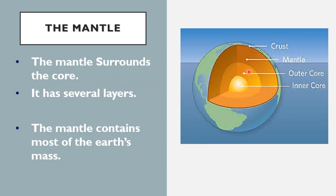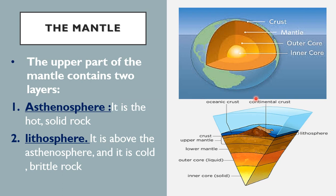After the core, we have another layer called the mantle. The mantle surrounds the core, and it has several layers inside it. Because of these multiple layers, the mantle contains most of the Earth's mass — most of the weight of the Earth is found here in the mantle.